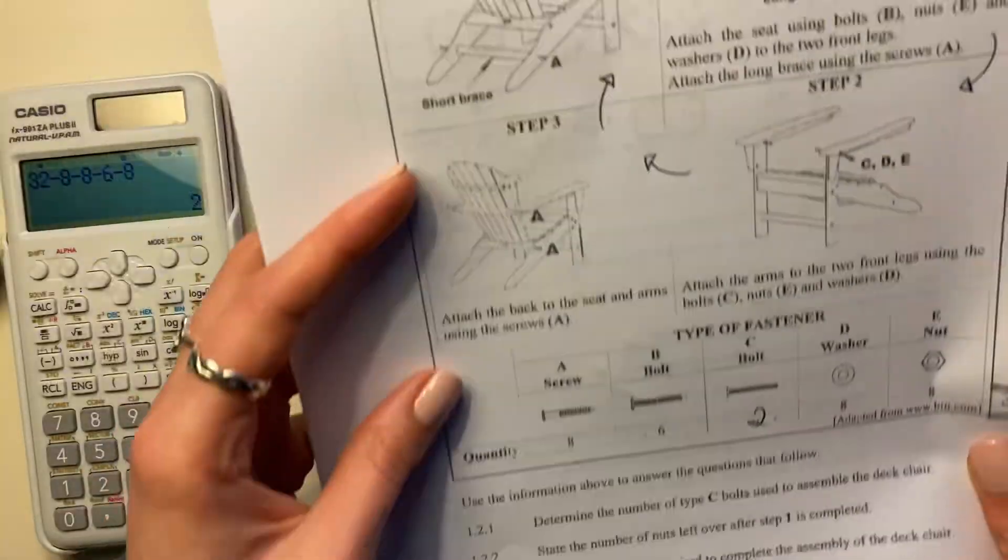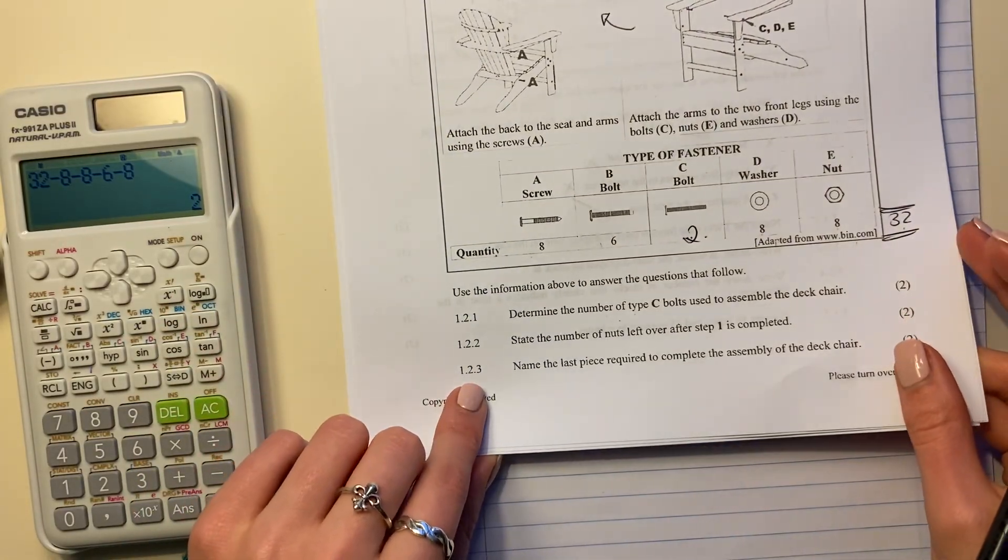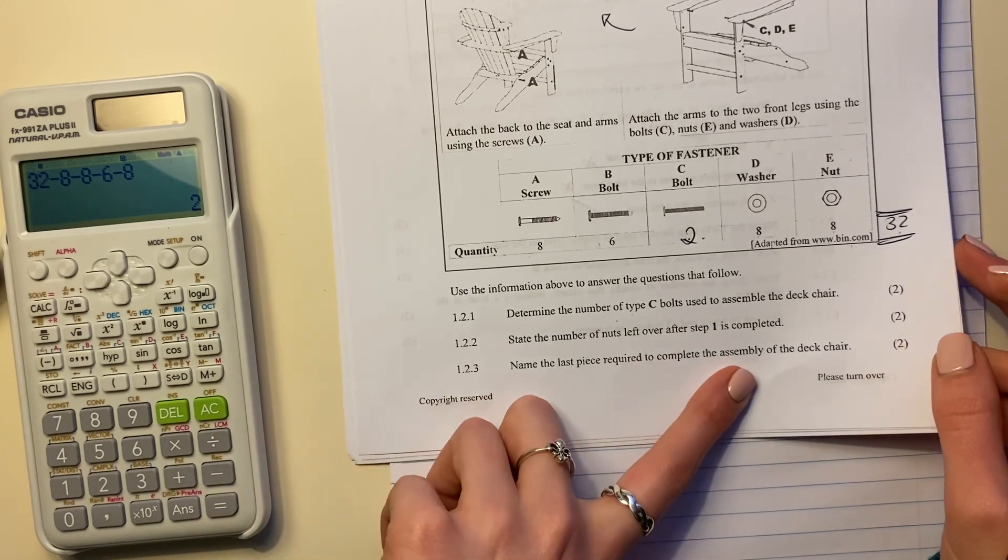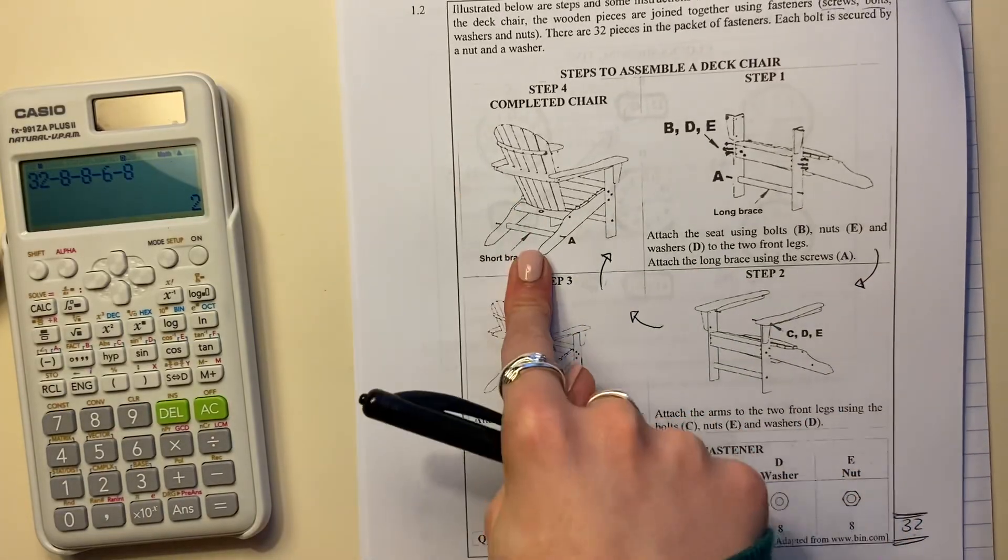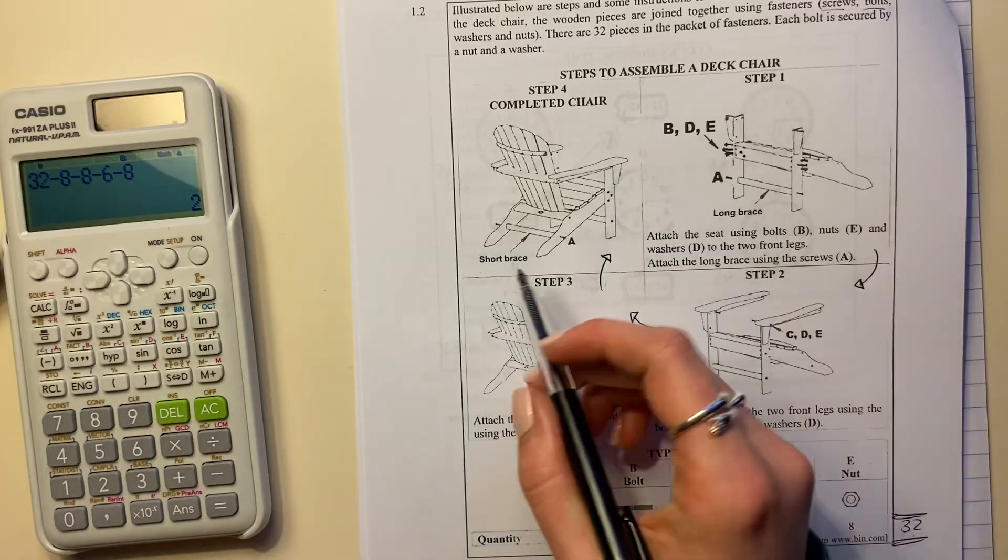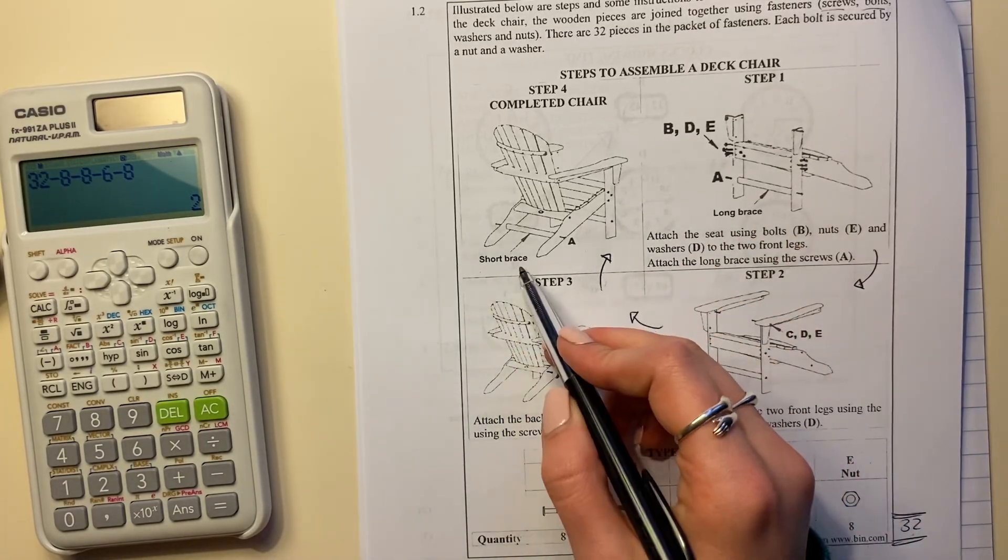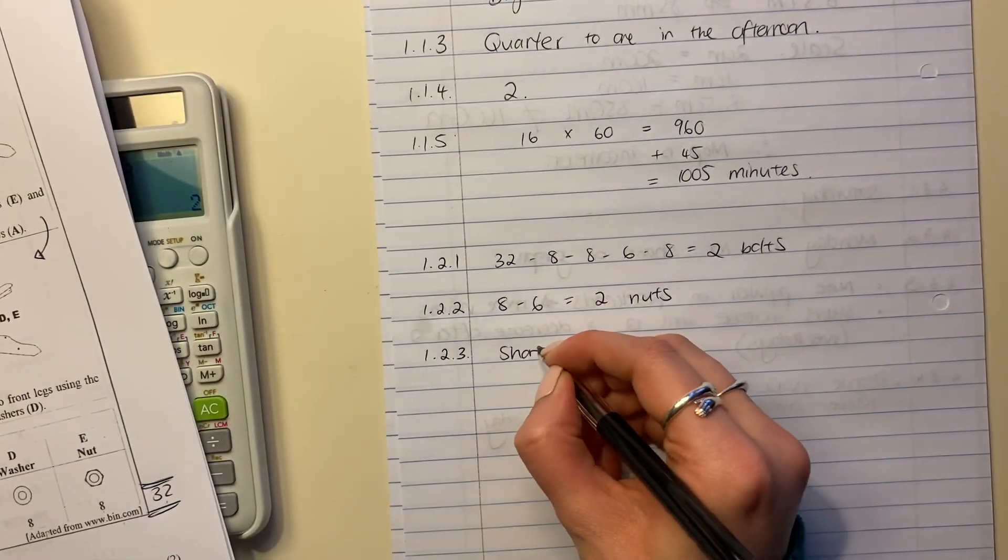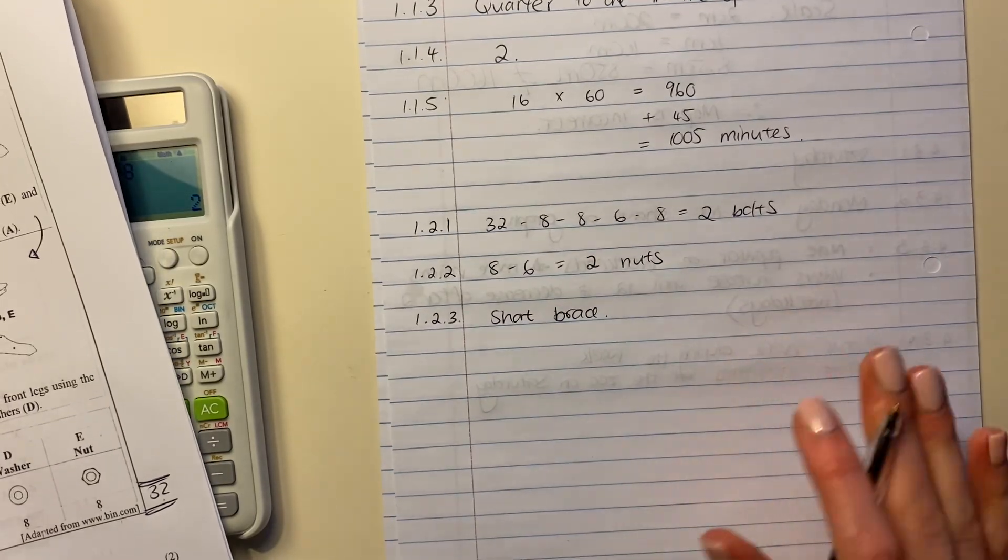These questions I know can be a bit tricky but they're easy marks. Let's get to the last question. Last question says name the last piece required to complete the assembly of the deck chair. So go to the last step which is this one. Step four. And what is the last thing that's added? Well the last thing that is added is the short brace. That's what's there. So you say the last thing that's added is the short brace. And we're done.